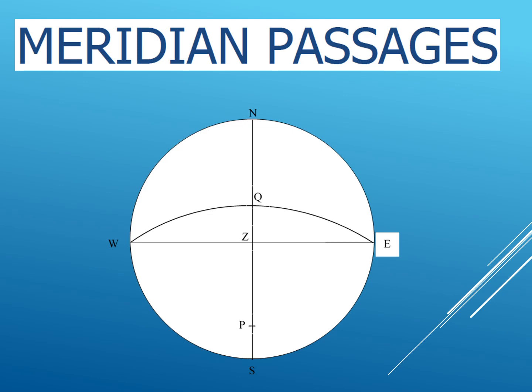Today we'll be talking about the meridian passage of a celestial body. Previously we've discussed numericals involving the calculation of a meridian passage time as well as finding the latitude using the meridian altitude of a celestial body. I'll give you the links to those videos, but today we'll be talking only about the theory of meridian passage — what a meridian passage is.